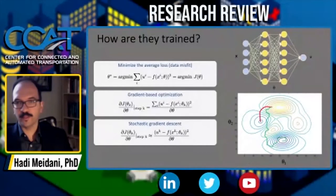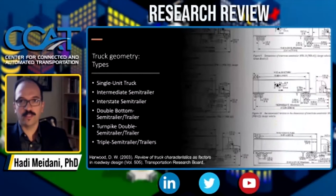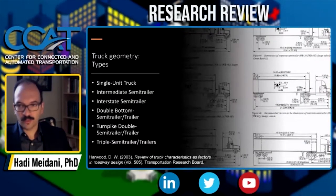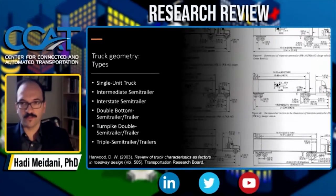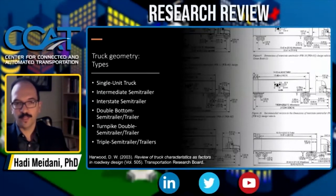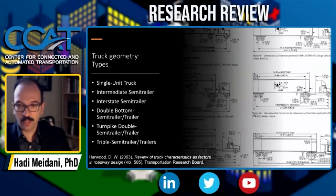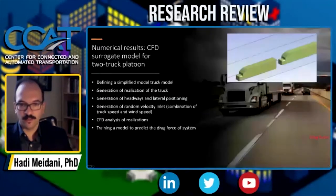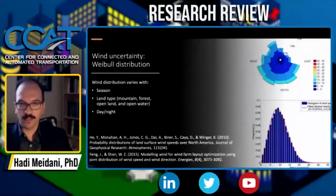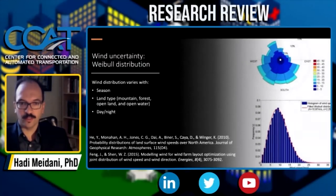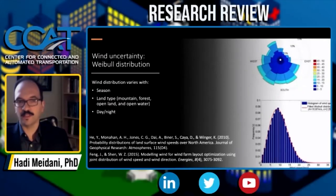Now let's look at how we solve the surrogate-based problem for truck platooning. One factor we consider is truck geometry — you could have platoons with various geometries from different manufacturers. We use a Weibull distribution for the wind speed, following studies showing that wind distribution varies with season, land type, and time of day. For a given season and location, we can use the corresponding Weibull distribution to inform the wind speed.